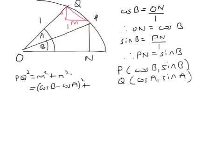Then a similar way, the length N is going to be the height of Q, which is sine A, minus the height of P, which is sine B squared.